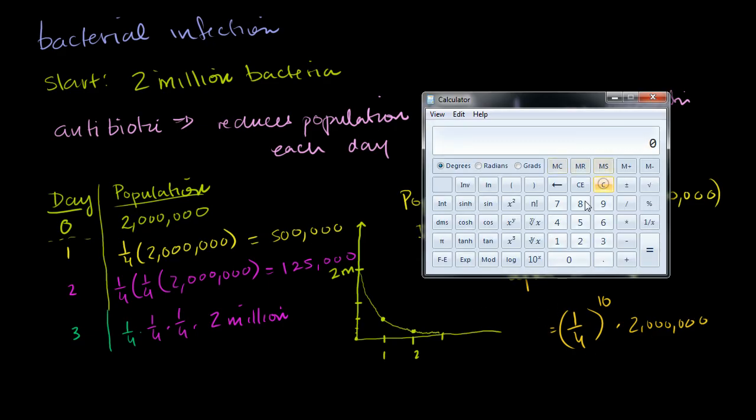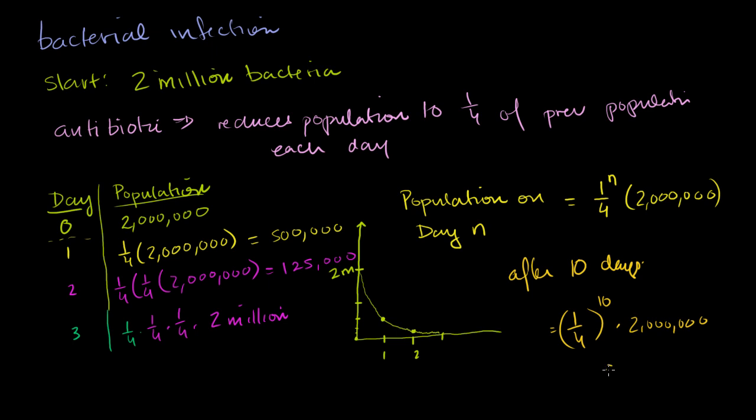So let's take 1 divided by 4 to the tenth power. That's equal to this very small number. Times 2 million: 1, 2, 3. Is equal to... we're only going to have 1.9 bacteria after the tenth day. So we're going to have 1.9 bacteria. So pretty much, most of the bacteria is gone after the tenth or by the tenth day.